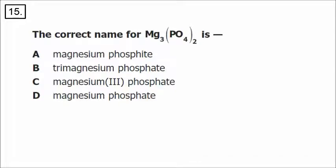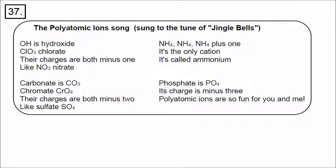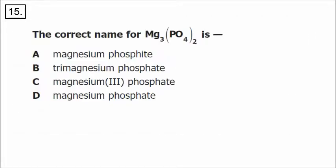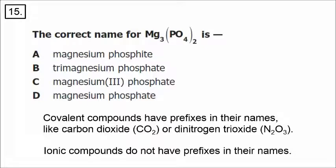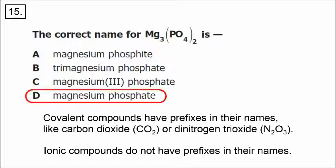In number 15, we have a chemical formula and must come up with the proper name. Phosphate is PO4. The material involves magnesium and phosphate — since there's a metal and nonmetals, it is ionic, not covalent. Ionic compounds do not have prefixes in their names, unlike covalent compounds like carbon dioxide. So it's simply magnesium phosphate. The Roman numeral 3 would indicate the charge on magnesium, but Roman numerals are only used for transition metals. The correct answer is magnesium phosphate.